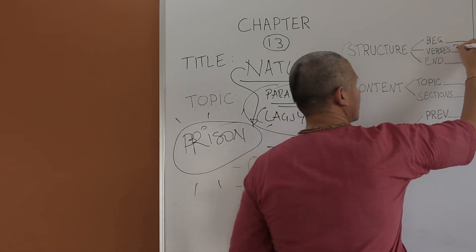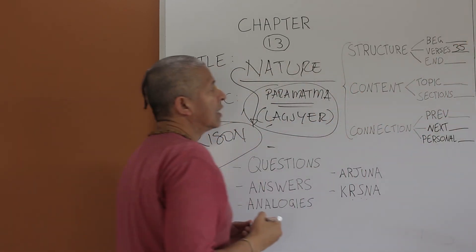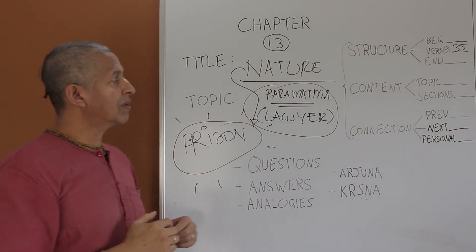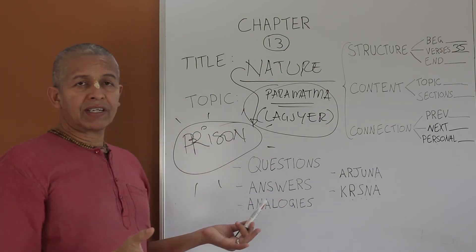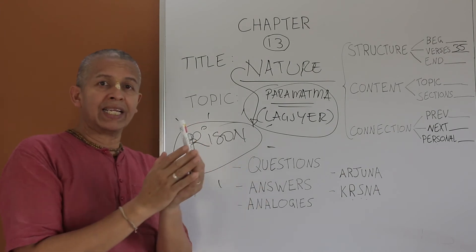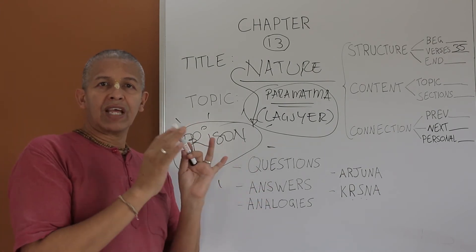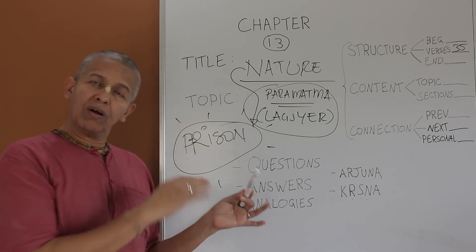There are 35 verses, it is relatively a small chapter. Any chapter of the Bhagavad Gita, except 2 and 18, takes us less than 10 minutes to read them all. Only the verses.